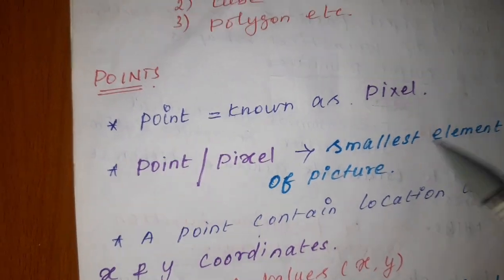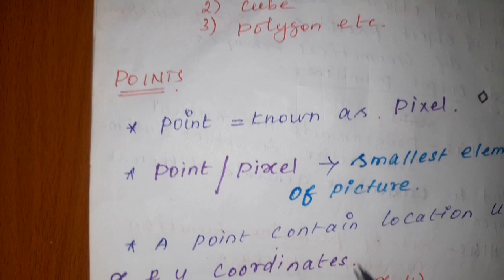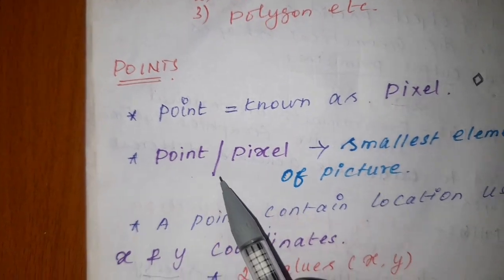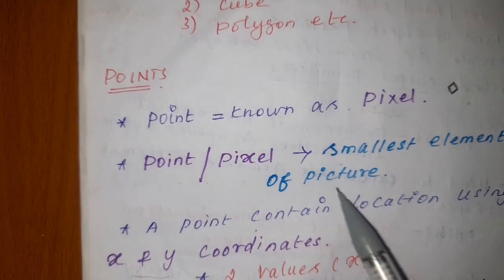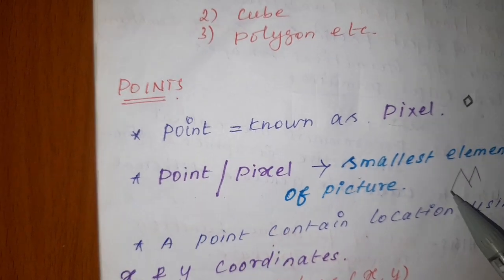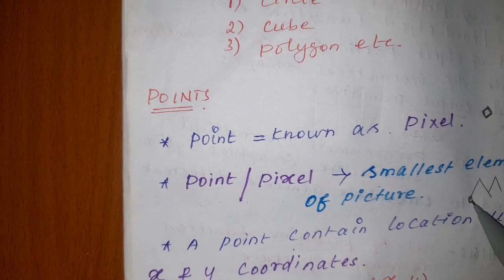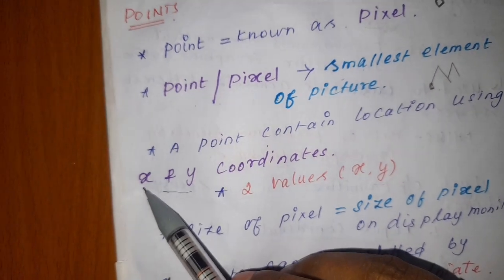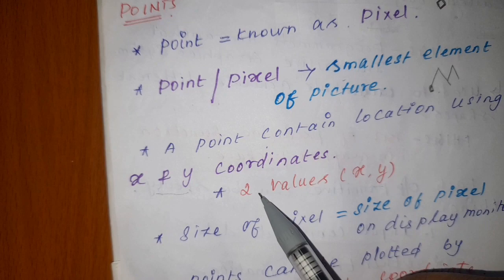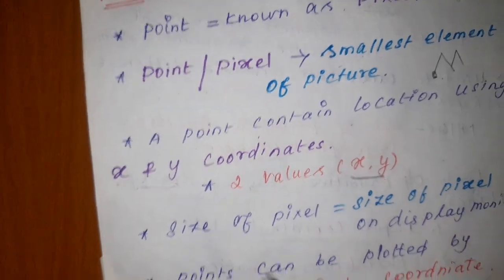In the first section of output primitives, we look at what a point is. A point is a pixel — it is a group of pixels represented in a square shape. The smallest element of a picture is known as a point or pixel. For example, if we zoom into a mountain image, a single pixel is known as a point. A point contains two coordinates: x and y.